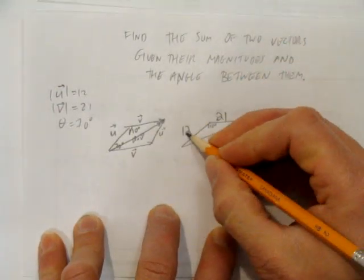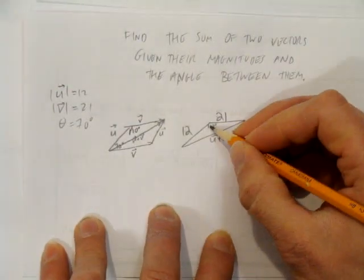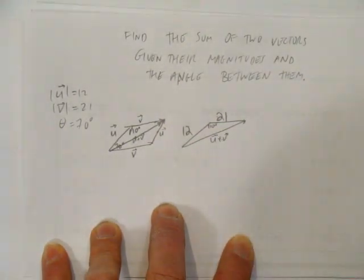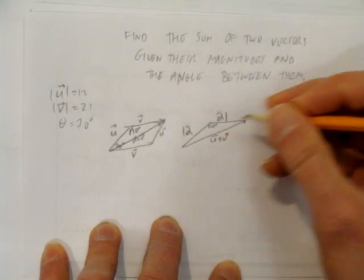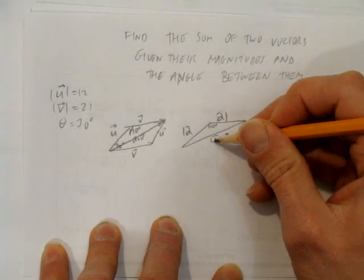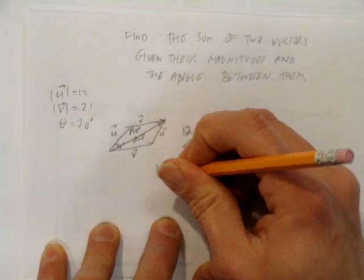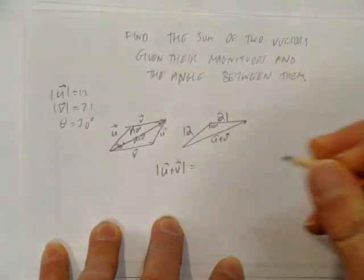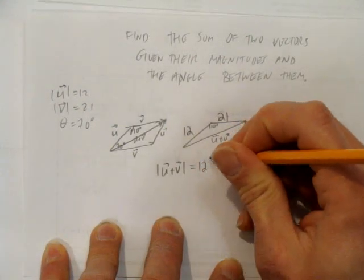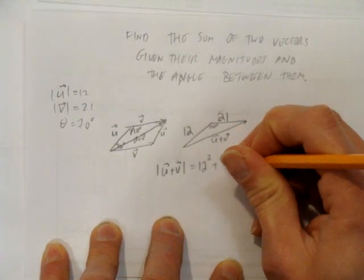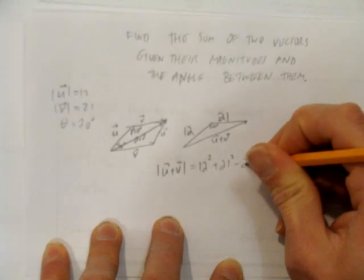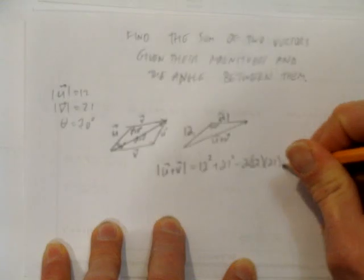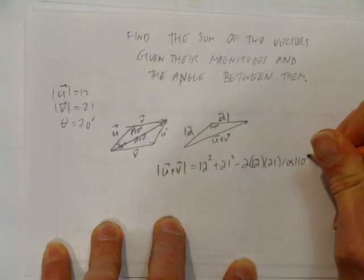So I have side, side, and angle between them, or SAS. This is a case for cosine law. I'm going to solve for the sum of these two vectors' magnitude by going vector u plus vector v equals, and now cosine law: 12 squared plus 21 squared minus 2 times 12 times 21 times the cosine of 110.